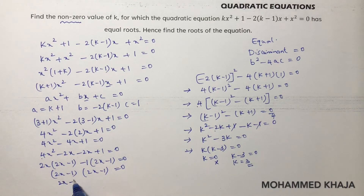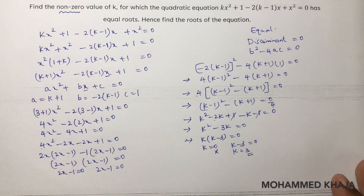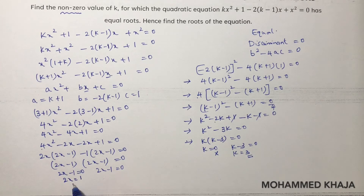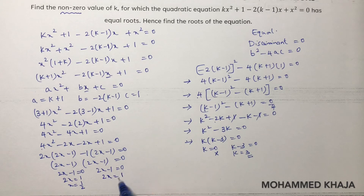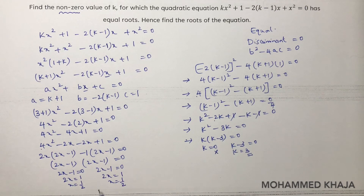So 2x - 1 = 0, which gives 2x = 1, therefore x = 1/2. Both roots are equal and x = 1/2.